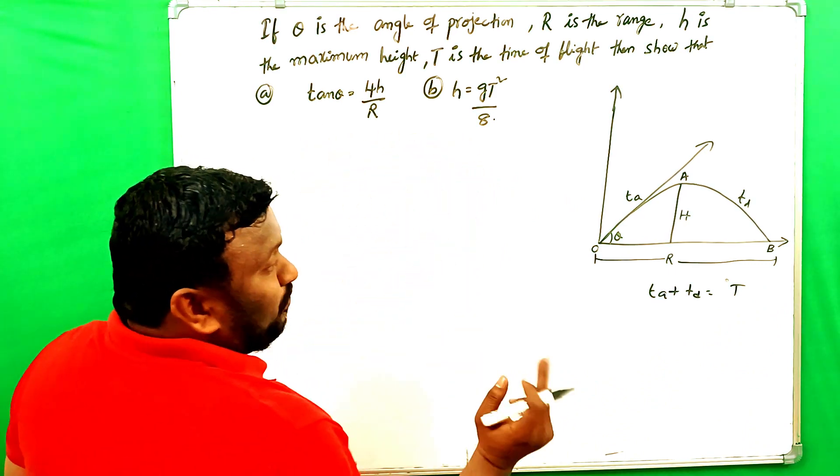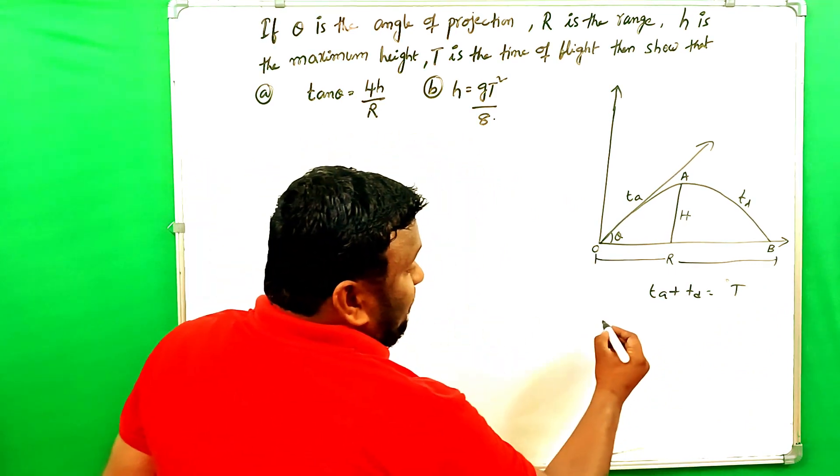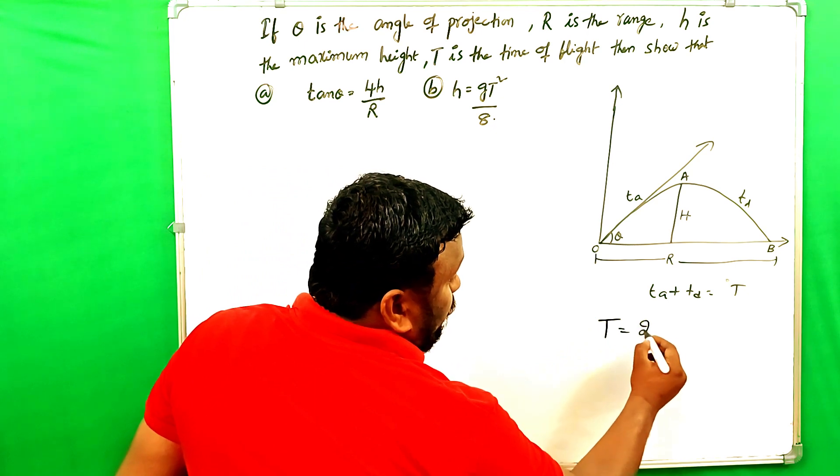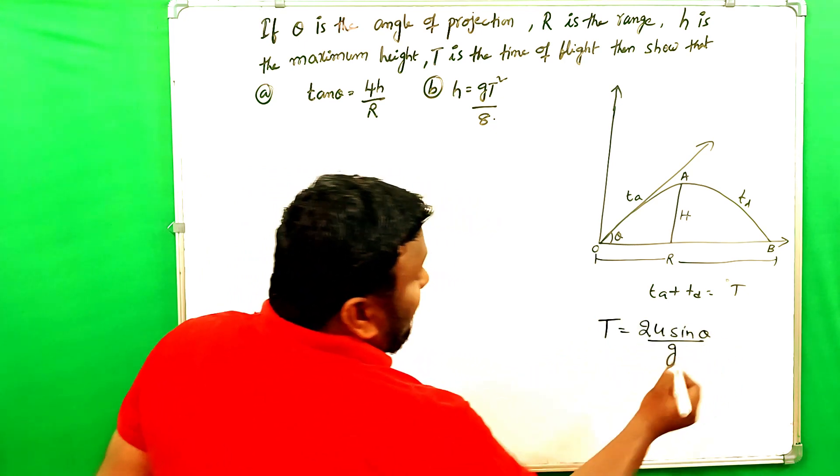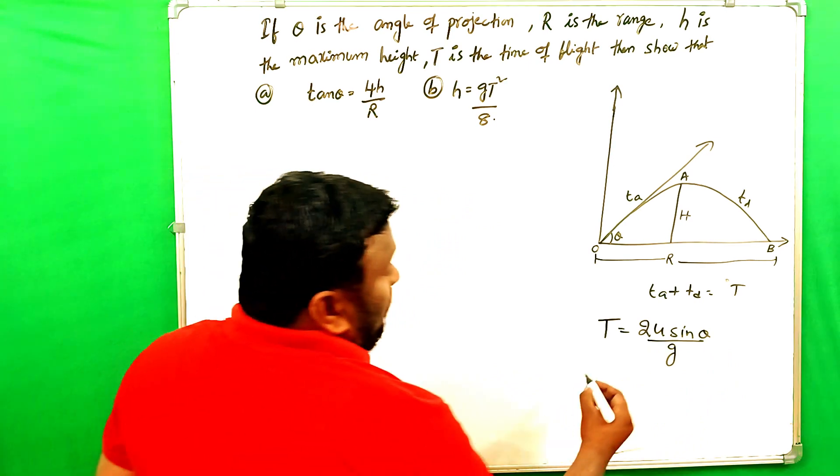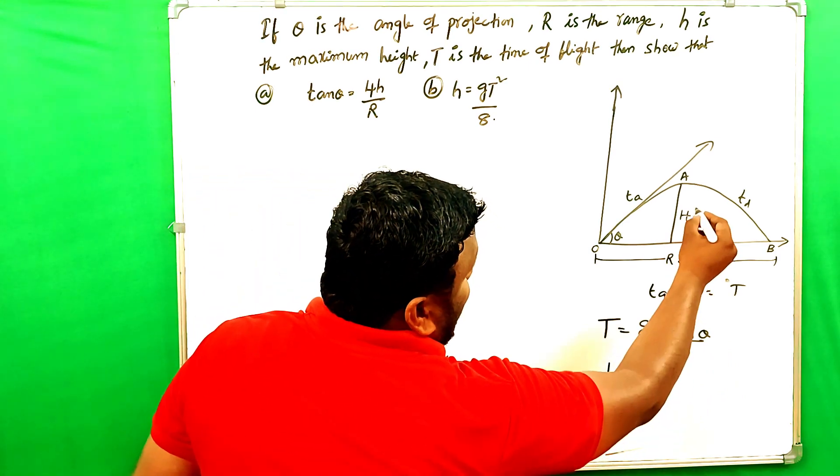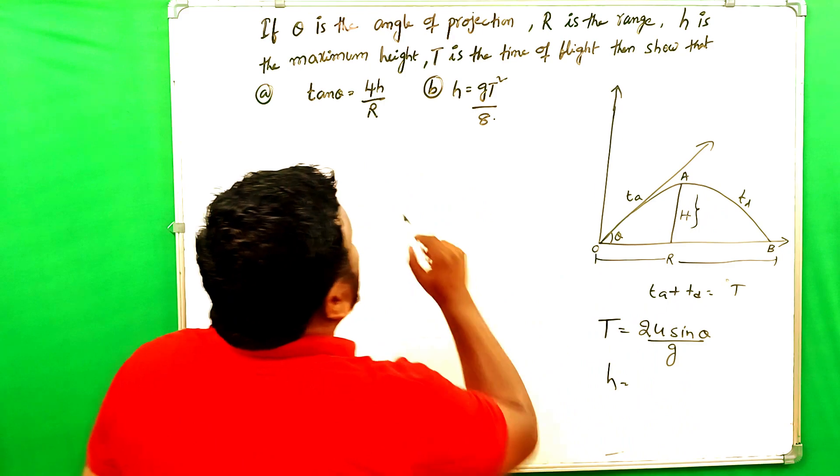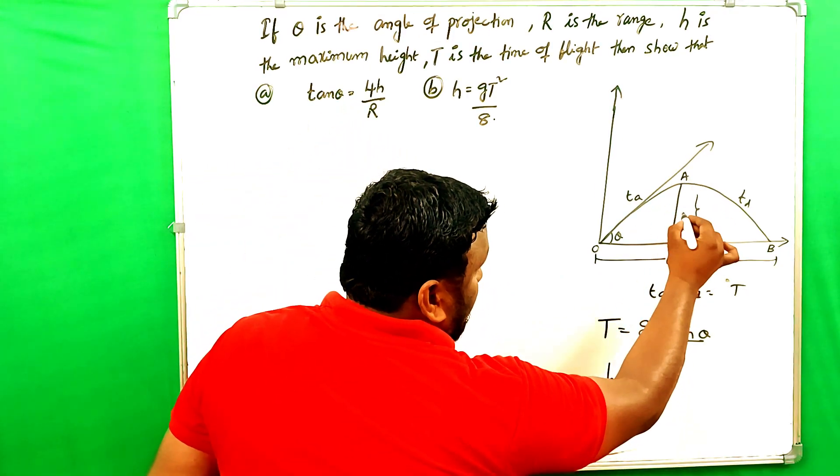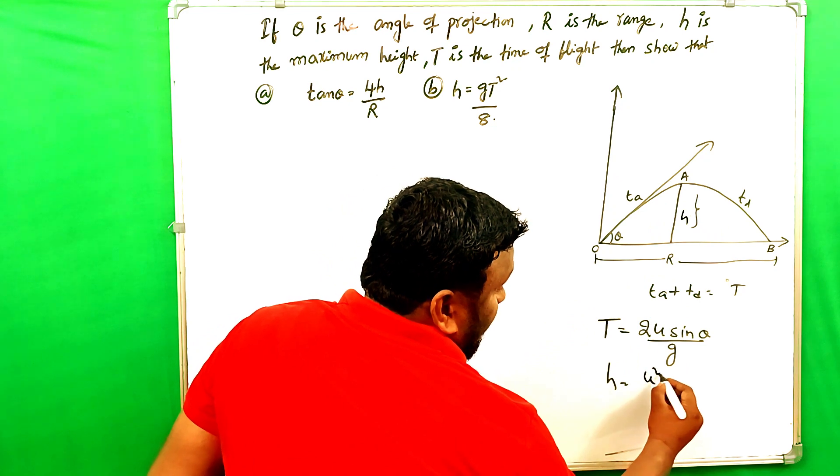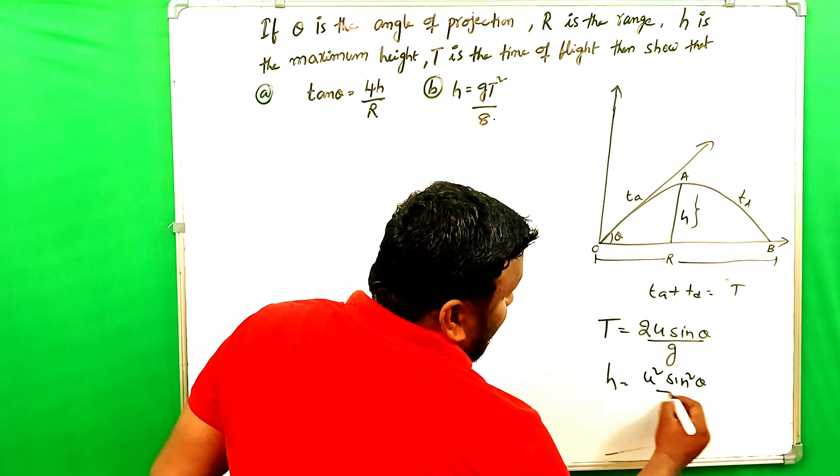If we didn't prove to you, we have three formulas. Time of flight: 2u sin theta by g. This is the formula. And number 2, maximum height. This is the maximum height, that means we have small h.